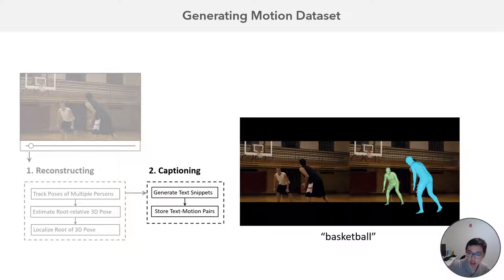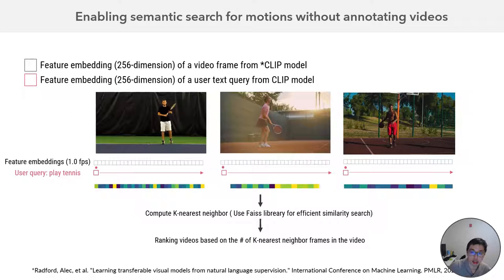Now we have the human pose. The next thing we want to do is let users easily search for the motion they want. Imagine that a user downloads 100 videos with different motions — it becomes hard to find a specific motion later. One simple approach would be manual annotation, but that is really tedious and time consuming. So we solve this by utilizing the OpenAI CLIP model, which can generate feature embeddings that cross the image domain to the text domain. For each video, we compute the feature embedding per frame — one frame per second — and store all these embeddings. When a user wants to find a specific motion like tennis, the system computes the similarity for all stored feature embeddings across all videos and then computes the K nearest neighbors to rank each video by relevance.